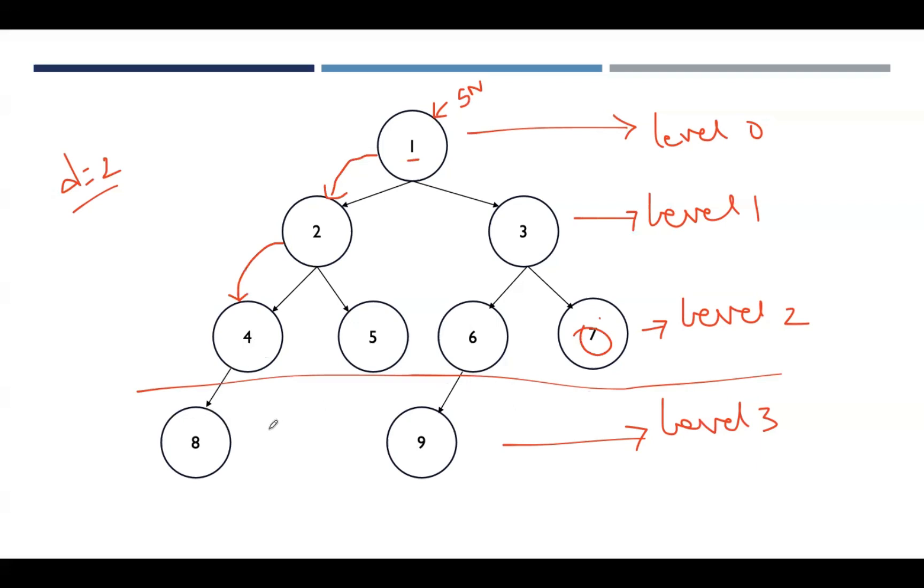The algorithm won't consider anything after this level 2. So instead of taking 8, it will backtrack and move to 5. After 4, we'll get 5. For 5, there are no adjacent vertices.